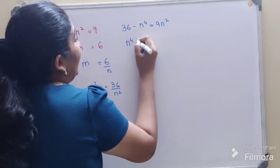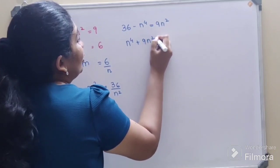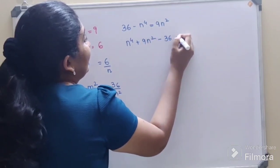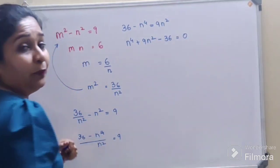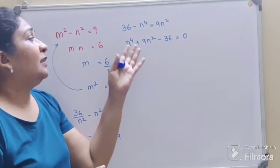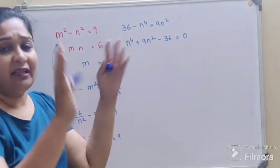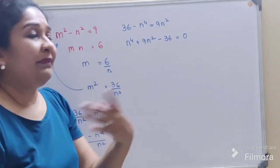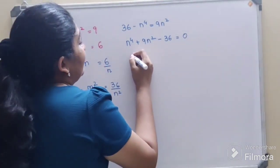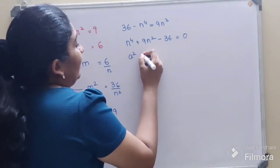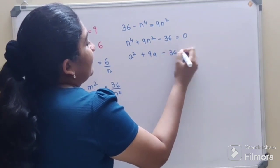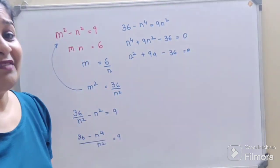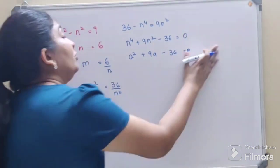Now understand, you can either take another variable and make this as what, a. Let's say you can either do this this way: a square plus 9 a minus 36 is equal to 0. But since we're talking about Olympiad, I want you all to get used to the fact that this can very well be solved like that only.